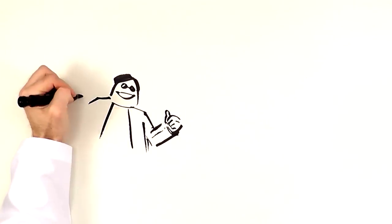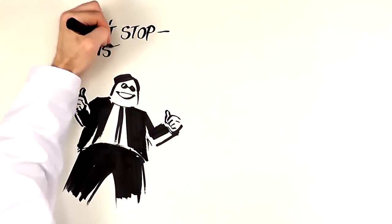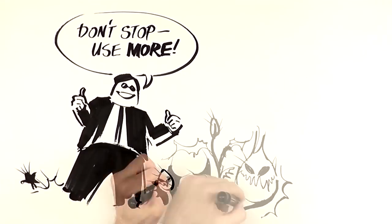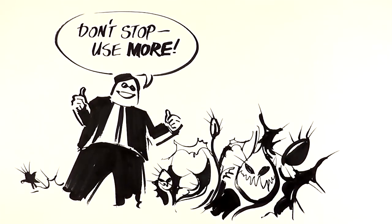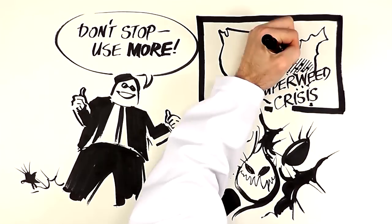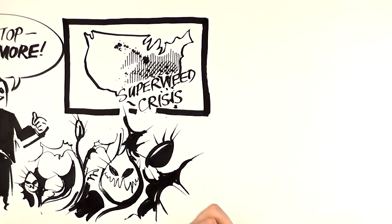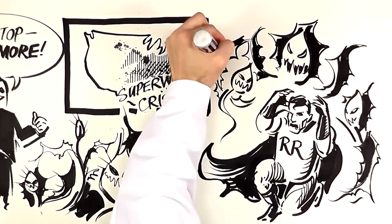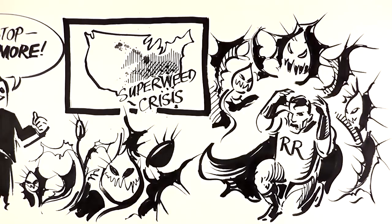Encouraged by Monsanto's marketing campaigns, farmers used so much Roundup that resistance soon accelerated into a superweed crisis. Millions of U.S. farm acres are now infested with superweeds. Instead of solving the problem, Monsanto has supersized it.